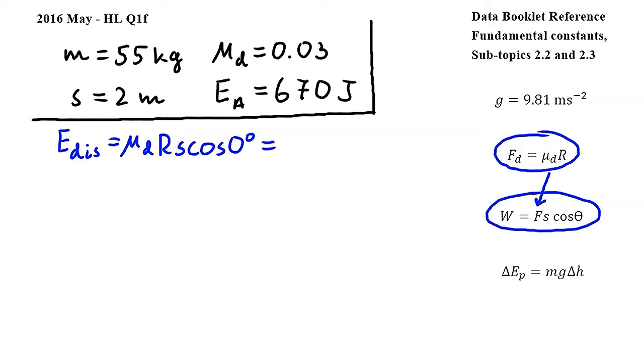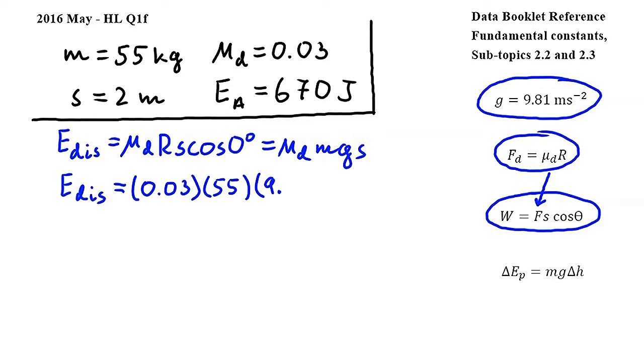Since the blocks don't move vertically, the normal reaction force is equal to the weight of the block. This means that I can replace R by the weight, giving me μd times the weight, so mg multiplied by s. Since cosine zero is equal to one, I can just omit it from the equation. Let's substitute, so we get 0.03 times 55 multiplied by g, which is the gravitational acceleration and which can be found in the fundamental constant section of the data booklet and is 9.81, multiplied by 2.